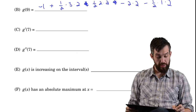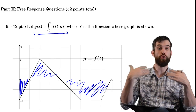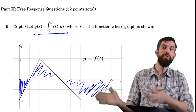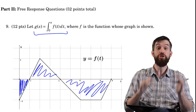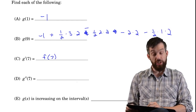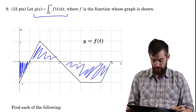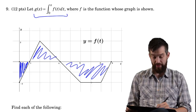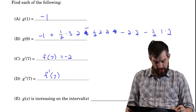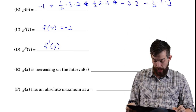For g′(7) and g″(7), the key insight is that by the Fundamental Theorem of Calculus, g′(x) = f(x) and g″(x) = f′(x). So g′(7) = f(7). Looking at the graph at x = 7, the value is −2. And g″(7) = f′(7). The slope of f at x = 7 is horizontal — no rise — so f′(7) = 0.